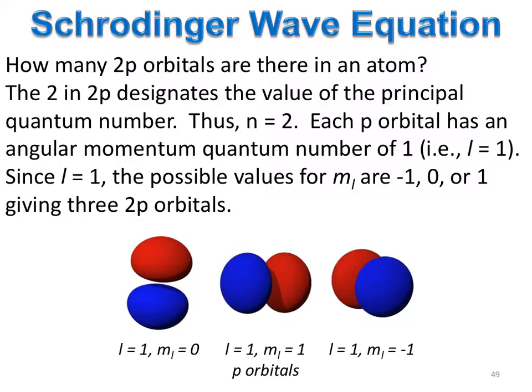Since l equals one, the possible values for m sub l, the magnetic quantum number, are negative one, zero, or one, giving us three p-type orbitals. Each one is the same in energy, but they are oriented in space in different directions.